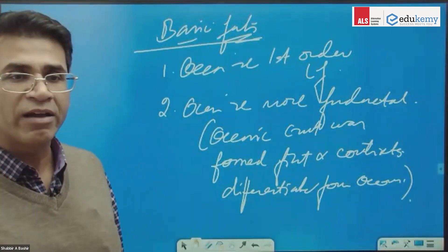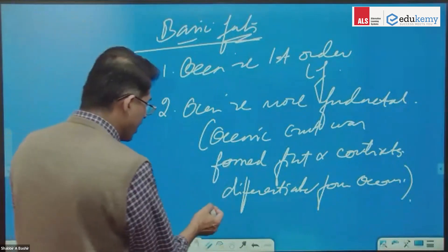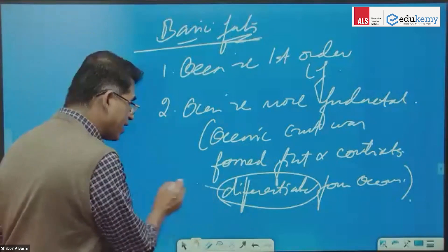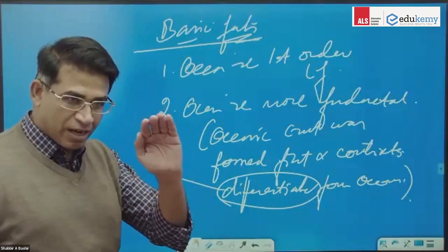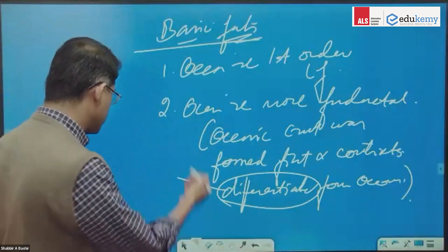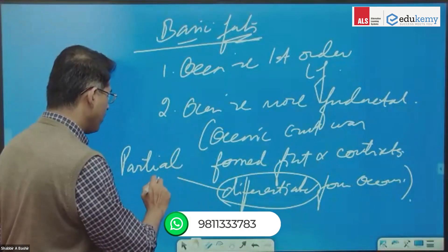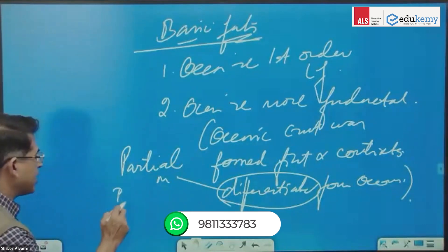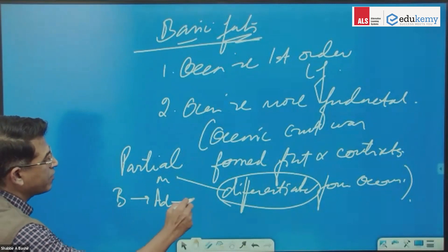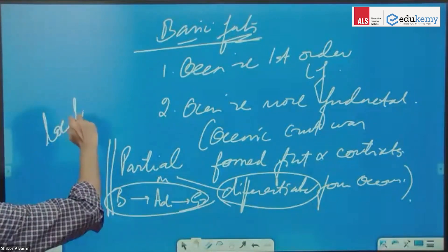The oceans were formed first and the continents were differentiated from the oceans. By differentiated, I mean through the concept of partial melting — where basalt converts into andesite, and andesite converts into granite.